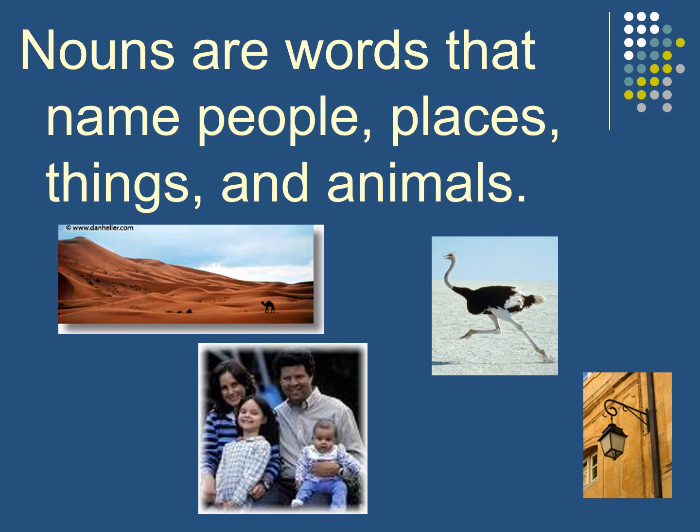In this video, we'll know the difference between common nouns and proper nouns. First, what are nouns? Nouns are words that name people, places, things, and animals. For example, the word family is a noun. Desert is a noun. Ostrich is a noun. Bird is a noun. Lamb is a noun. Things that I can see and touch.